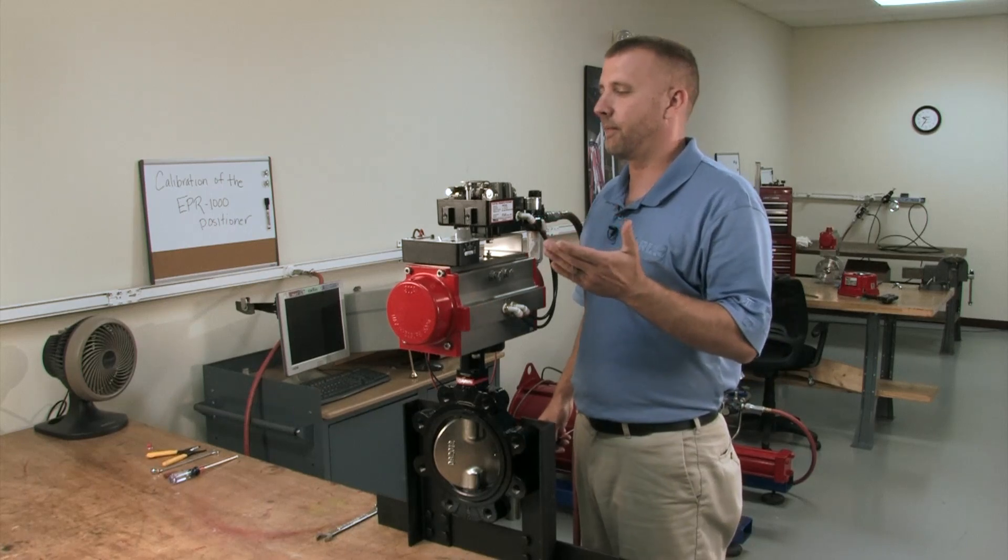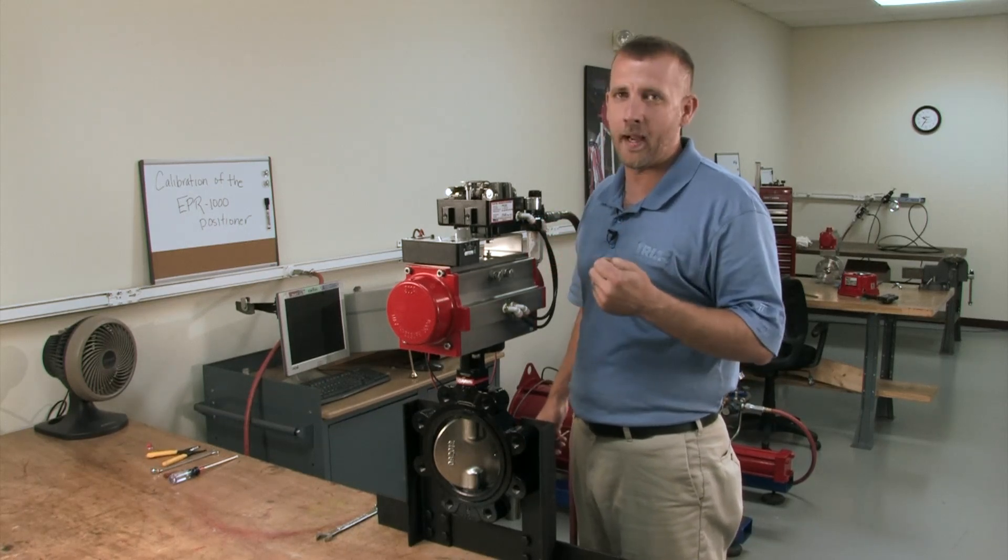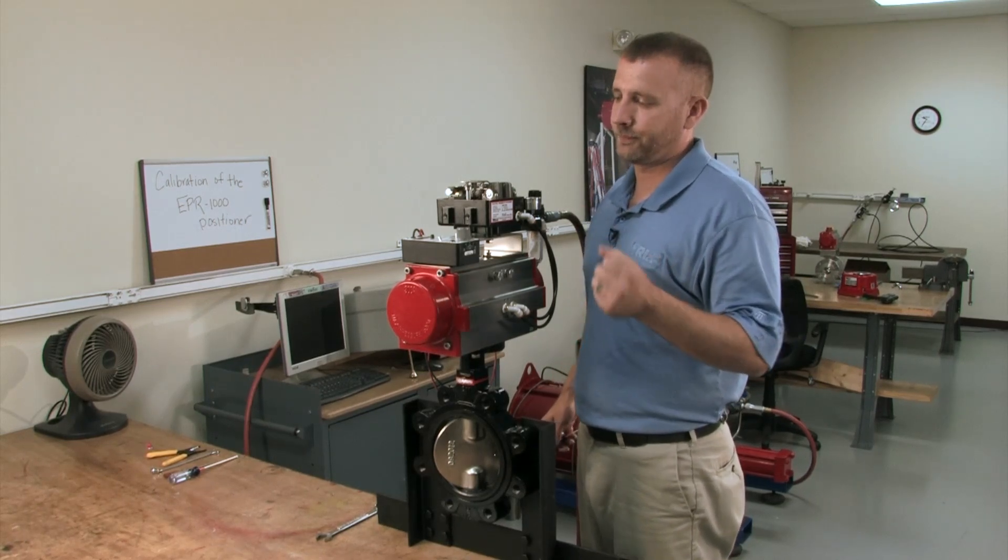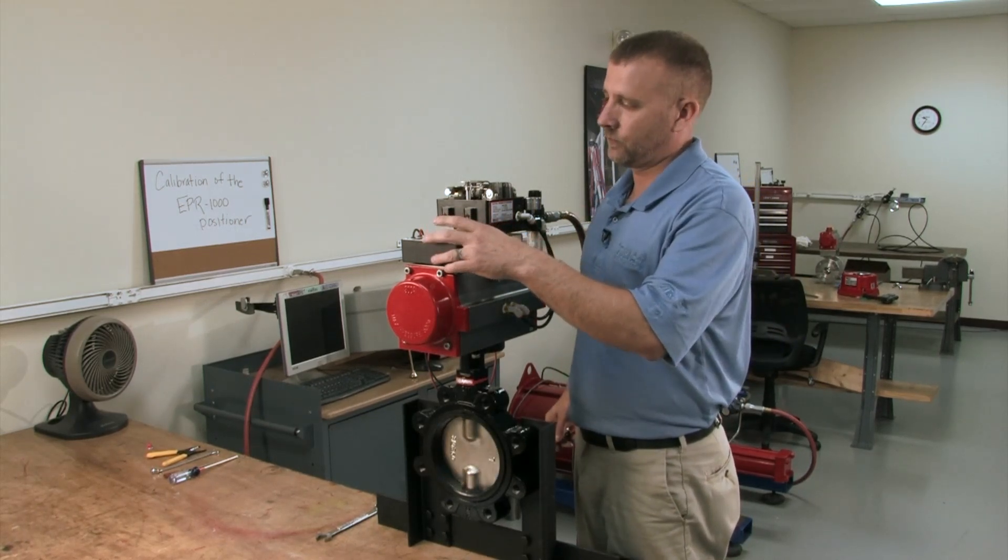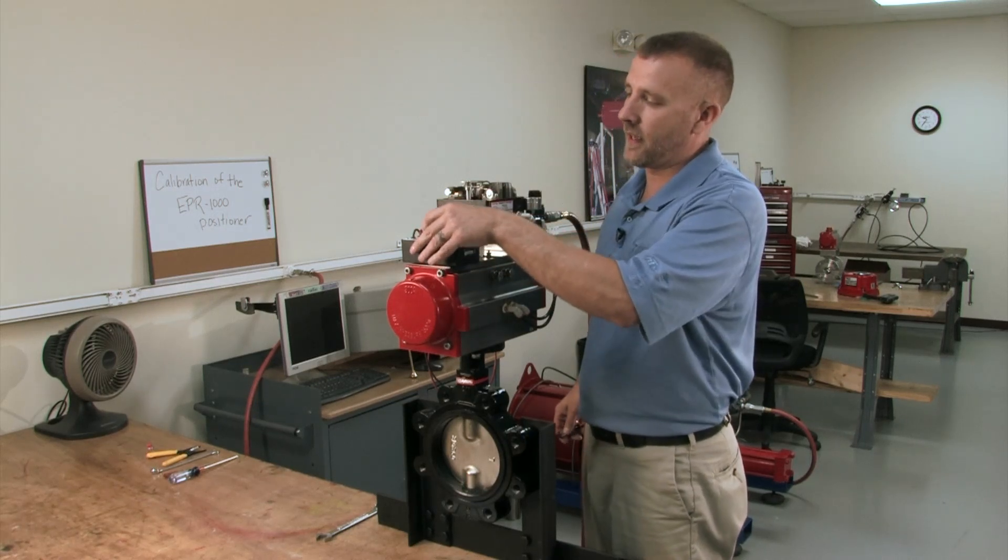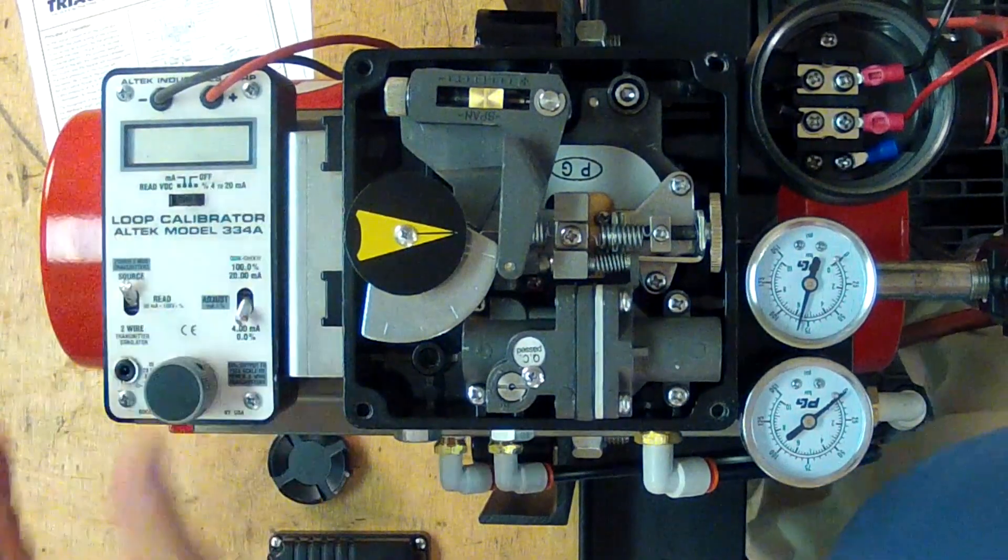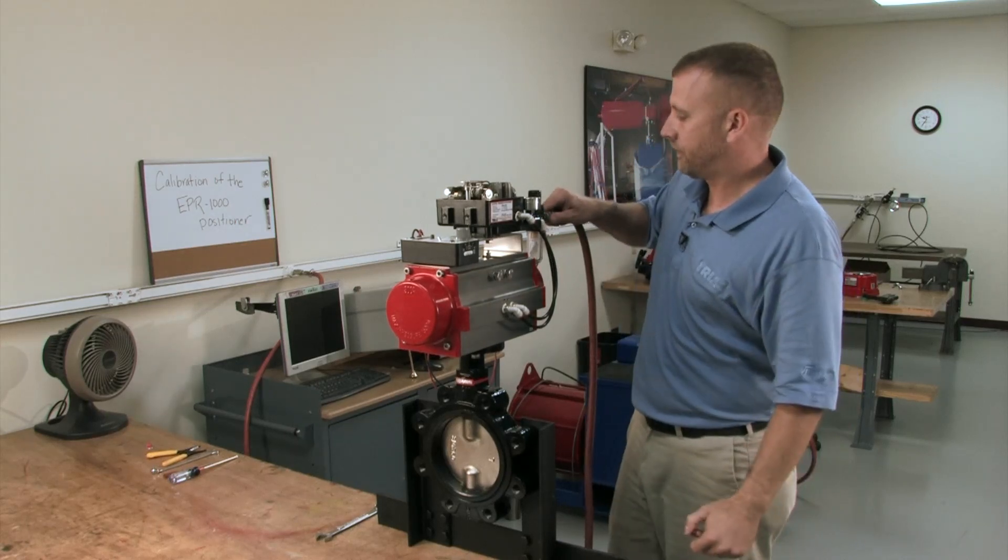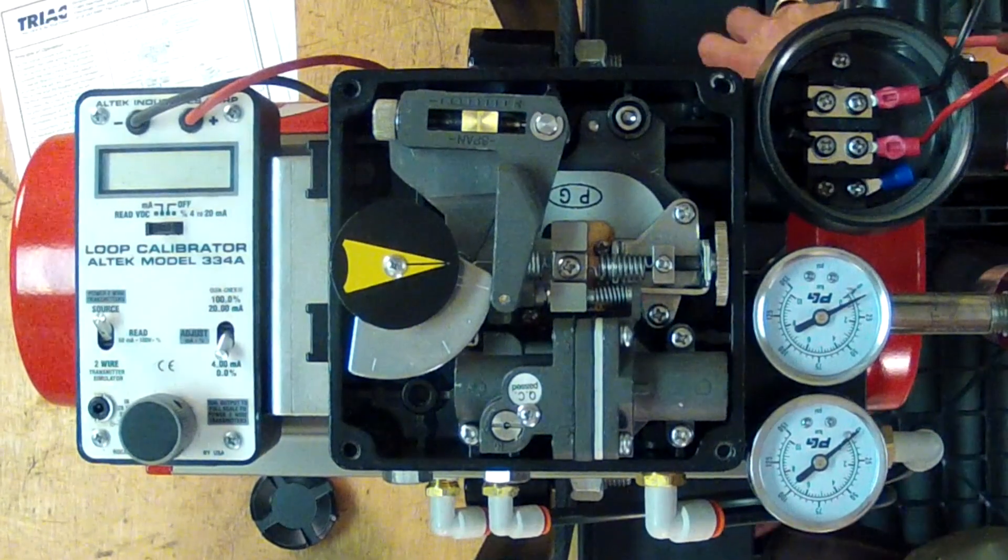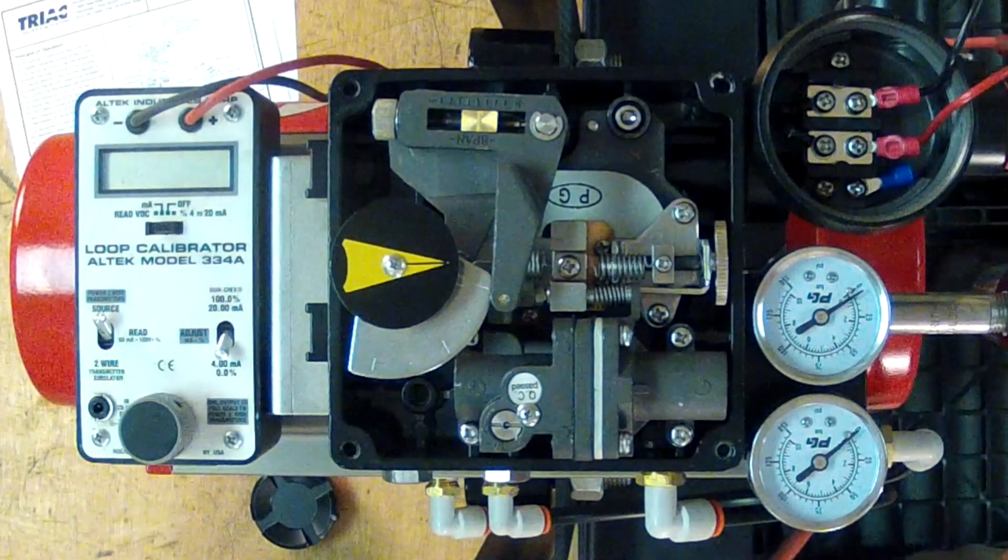Basically you are adjusting the zero and span, fine tuning the package to your calibration needs. So now we're going to just turn the power off to the calibrator. Unhook our air line. And that is your basic calibration of your EPR-1000 positioner. Thank you.